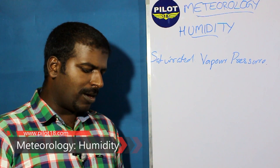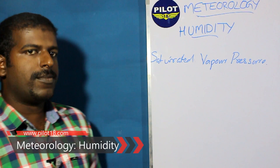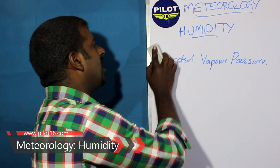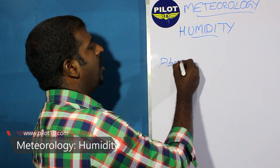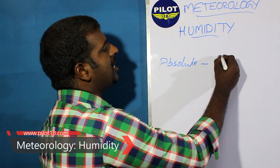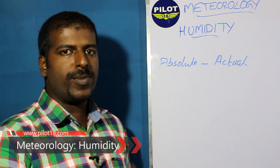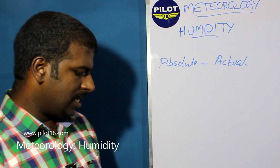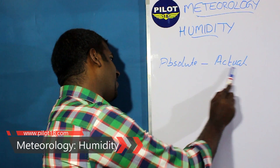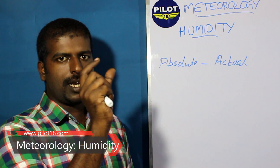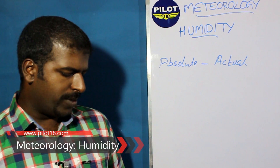When air is saturated it is not partial vapor pressure — it is called saturation vapor pressure. Then comes absolute humidity. Absolute humidity is the actual measurement, the actual value of humidity present in the air at a given temperature, given pressure, and a given point of time.